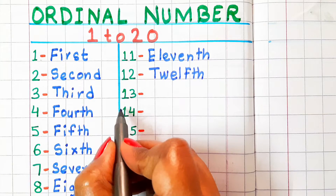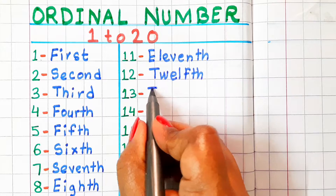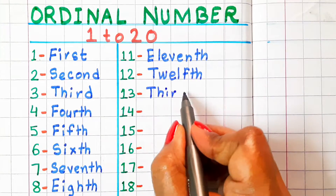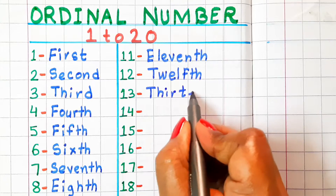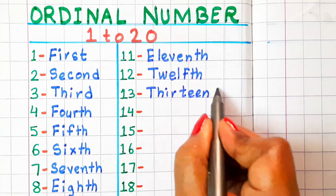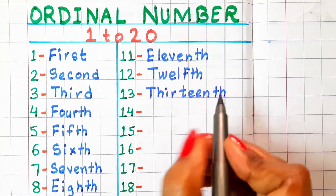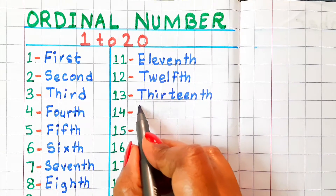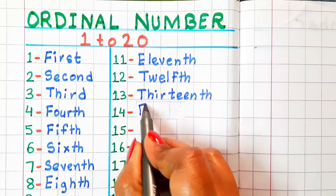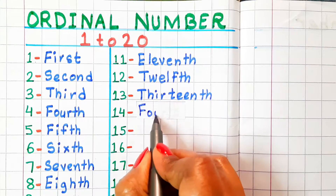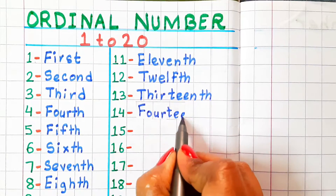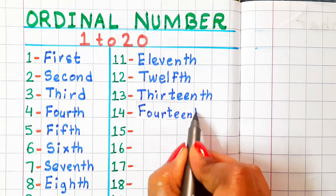13 — in ordinal number, it is called thirteenth. Spelling is T-H-I-R-T-E-E-N-T-H. 14 — in ordinal number, it is called fourteenth. Spelling is F-O-U-R-T-E-E-N-T-H.